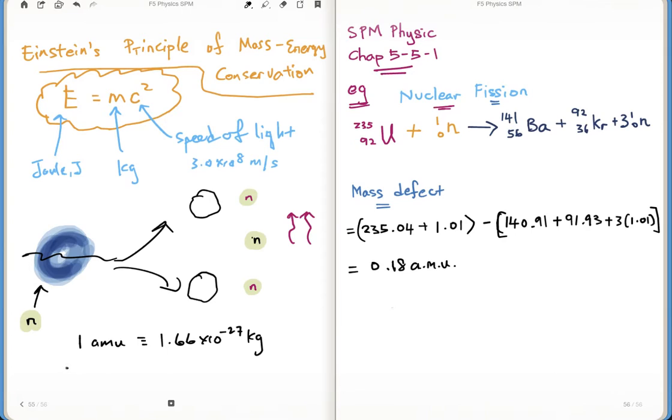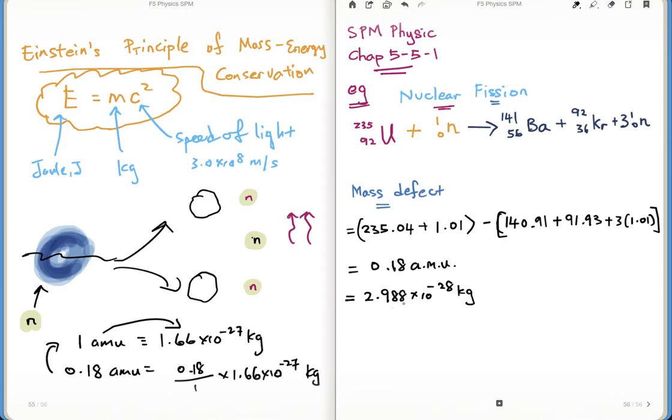If I have 0.18 AMU, therefore it would be 0.18 divided by the number above times the number across it. The unit would be kg. Therefore, the answer here would be equivalent to 2.988 times 10 to the power of minus 28 kg. We're talking about 1 atom - this is a mass defect for 1 atom. This is equivalent to this mass defect from uranium to the two daughter nuclei.